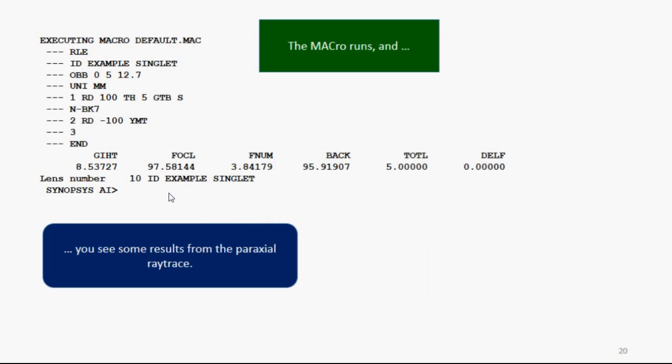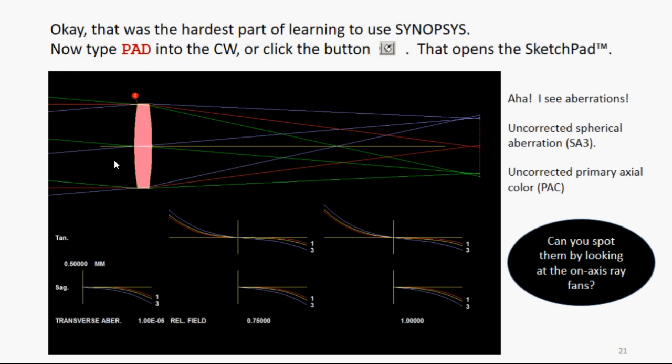So the macro runs, and you see some results from the paraxial ray trace. And here's your lens. Well that was the hardest part of learning to use Synopsis.